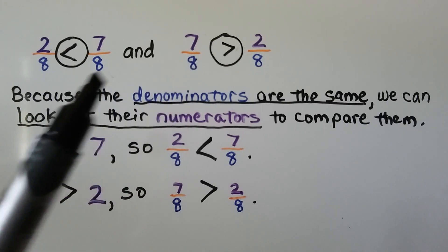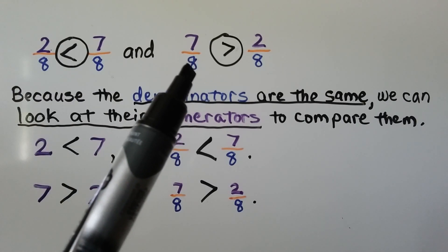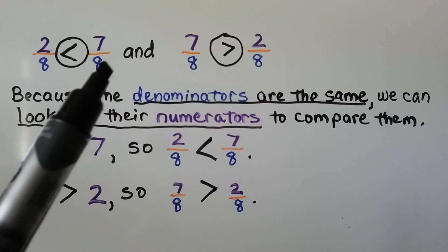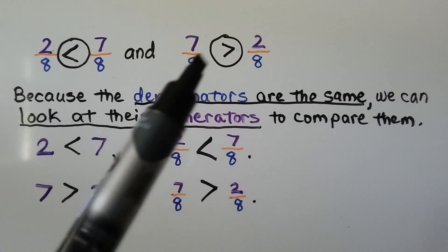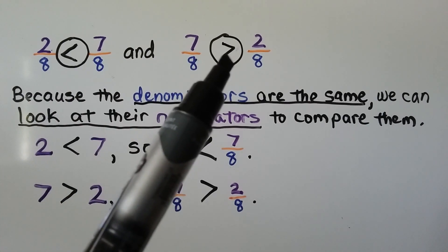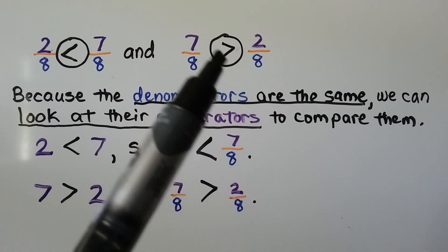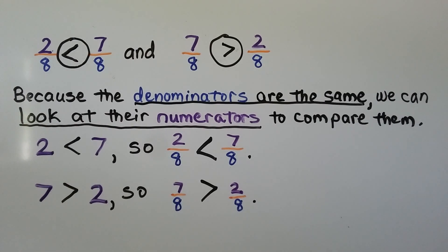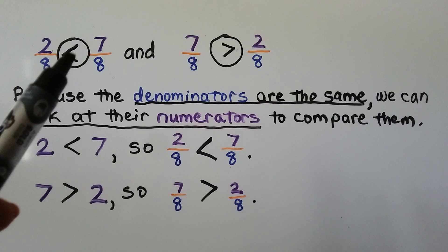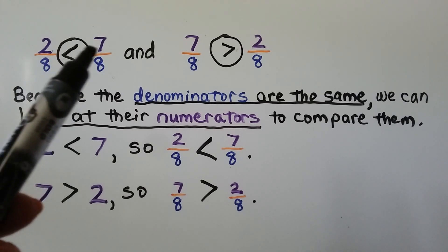See how we moved the fraction — the 7 eighths is now in the left position, whereas here it was on the other side. And look what happened to the sign — it switched! The sign is still open to the bigger fraction. When the 7 eighths was on this side, the sign was open to the 7 eighths, the bigger fraction.